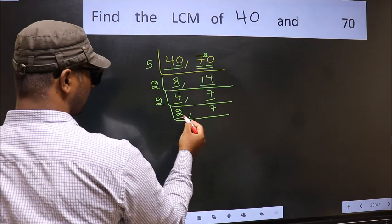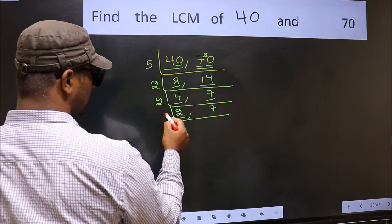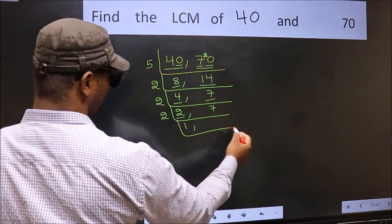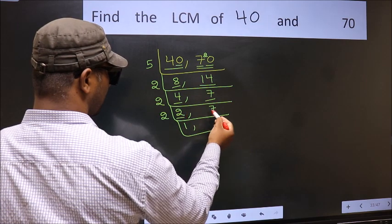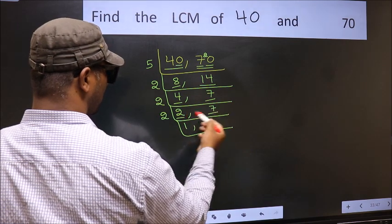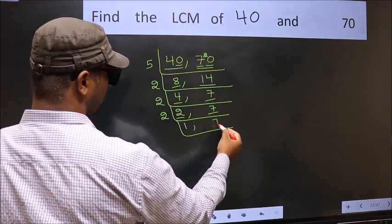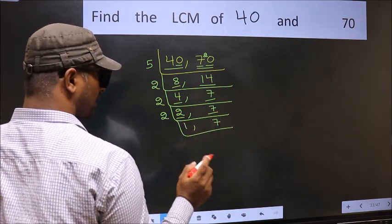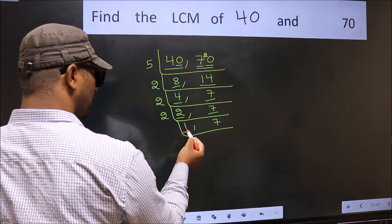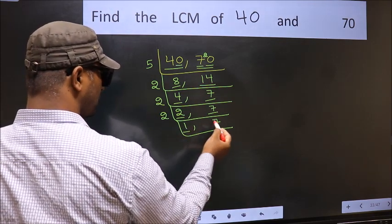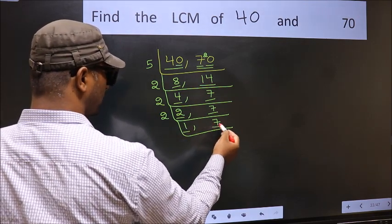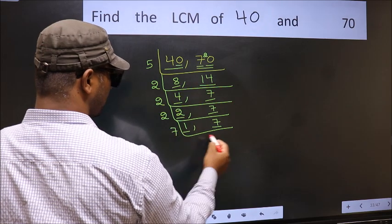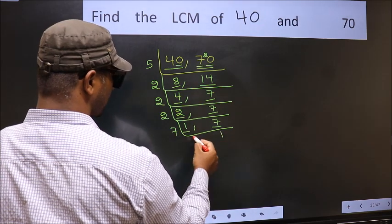Now we have 2 here. 2 is a prime number, so 2 wants 2. The other number 7 is not divisible by 2, so we write it down as it is. Now we got 1 here, so focus on the other number 7. 7 is a prime number, so 7 wants 7.